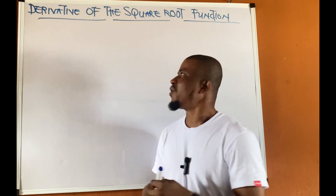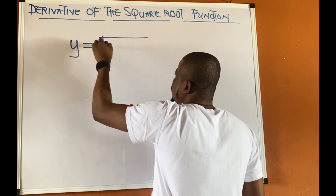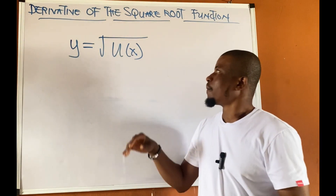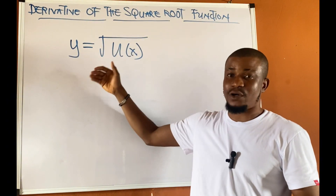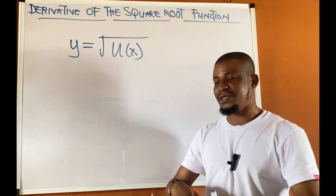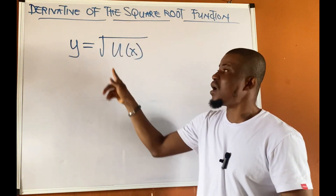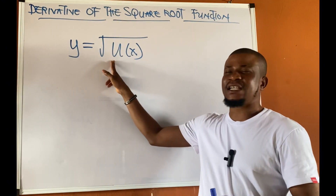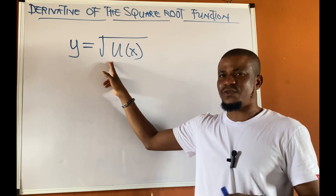If you have a function of this form — y equal to the square root of any function u of x — this is a chain function, but more specifically a square root function. The bigger function is a square root, and you have another function inside. To better understand the derivative of this, we need to start with the simplest square root function: y equal to root x.